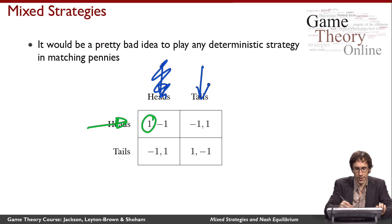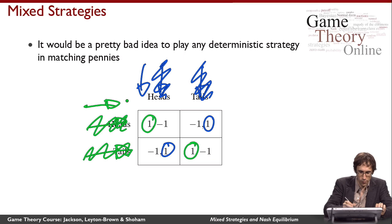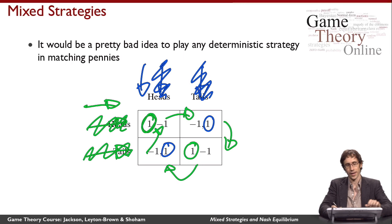Player two changes to tails so he can get a payoff of one, meaning that player one would prefer to change to tails to get a payoff of one, meaning that player two would prefer to change back to heads, and then player one would prefer to change back to heads as well. So you can see there's a cycle where we just bounce around between the different cells of this game matrix, and essentially no pair of deterministic strategies works for both players.